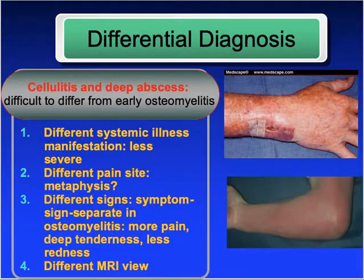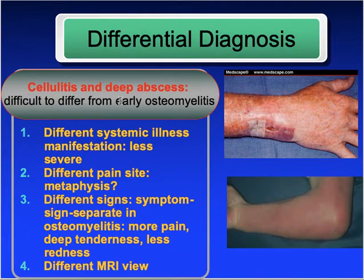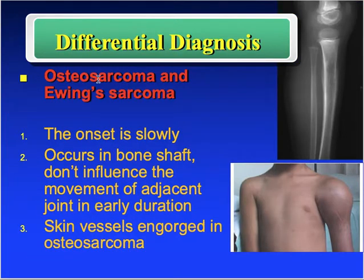The differential diagnosis for anyone presenting with redness and tenderness over a region includes: cellulitis or deep abscess, rheumatoid arthritis, osteosarcoma, and Ewing's sarcoma — bone tumors can all be in the differential diagnosis.